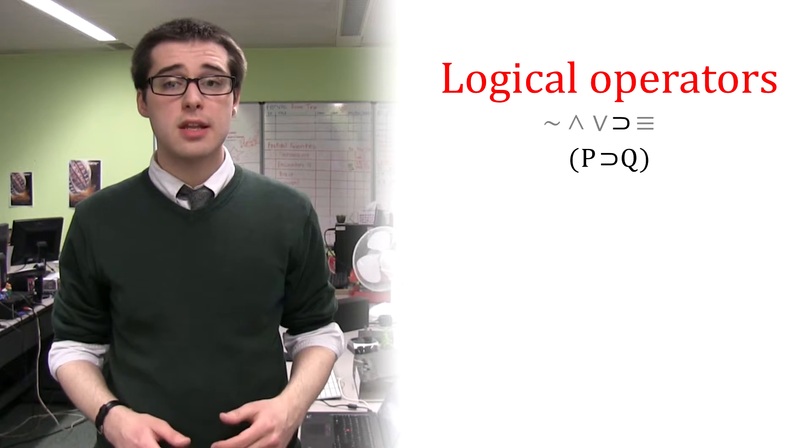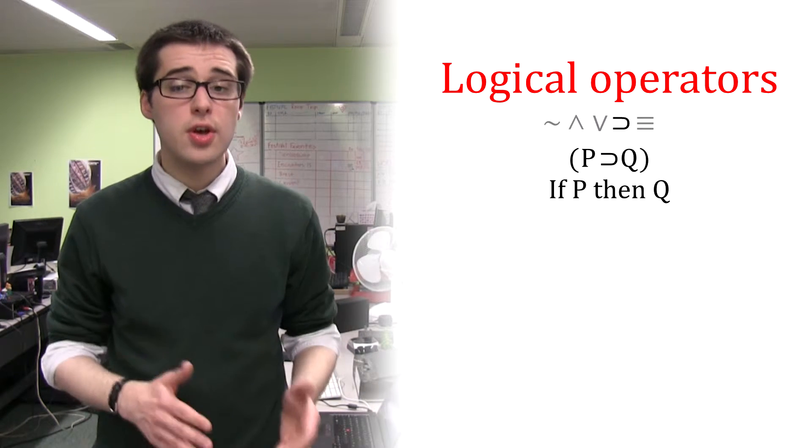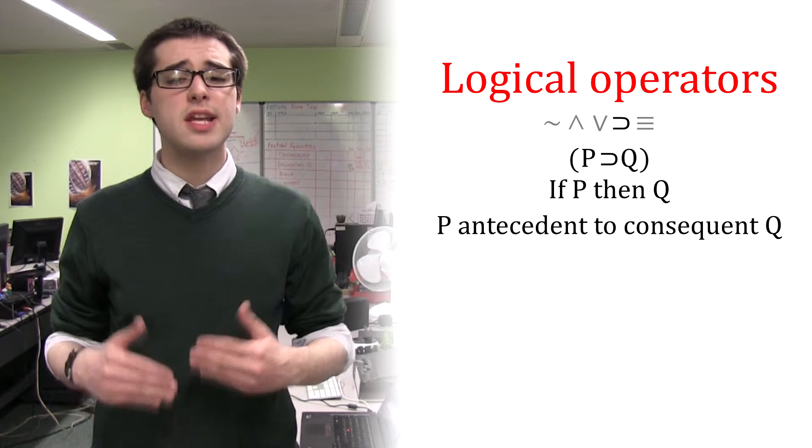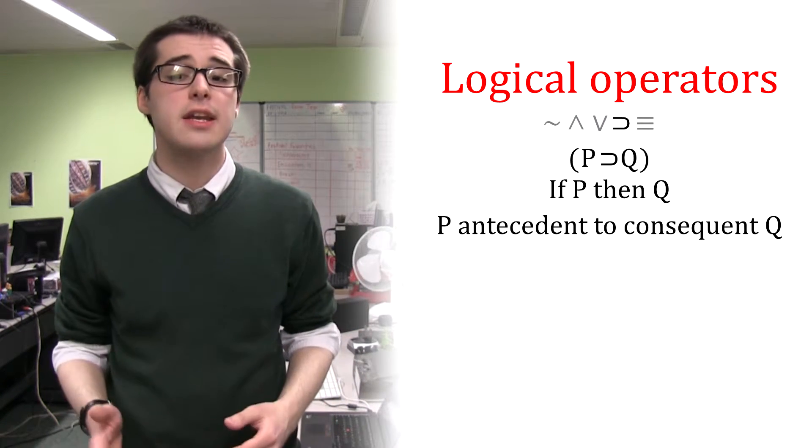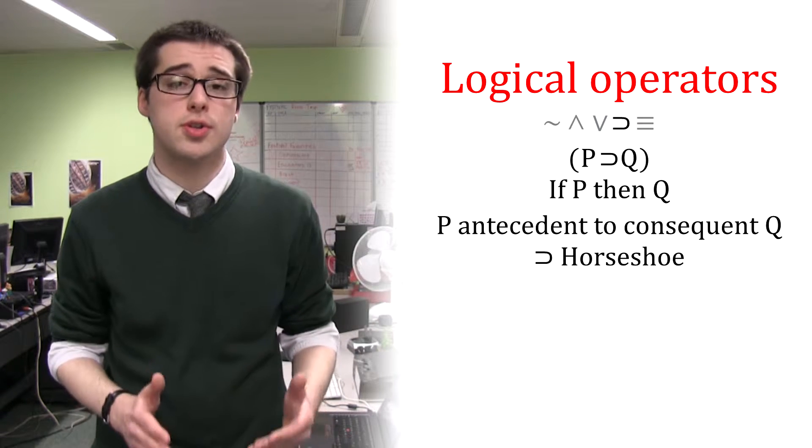Or is represented using the vee symbol. This means if P, then Q, and shows that P is the antecedent to the consequent Q.